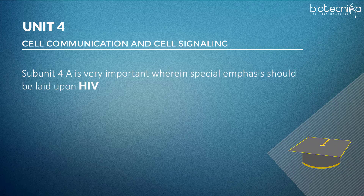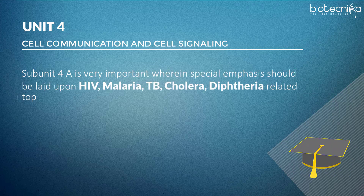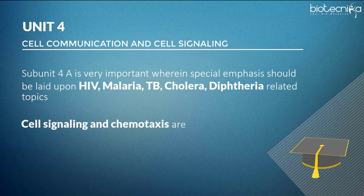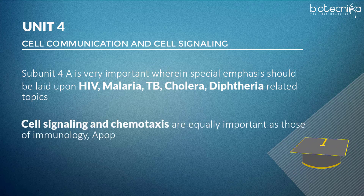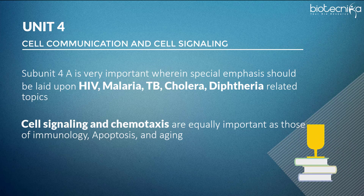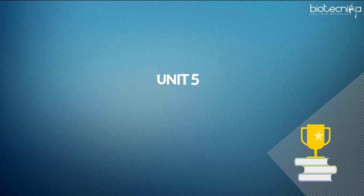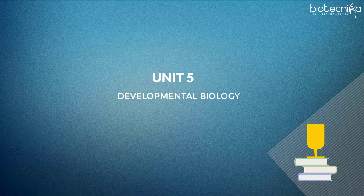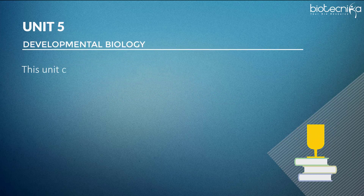Unit 4 — Cell Communication and Cell Signaling: Subunit 4A is very important, wherein special emphasis should be laid upon HIV, malaria, TB, cholera, and diphtheria-related topics. Cell signaling and chemotaxis are equally important, as are immunology, apoptosis, and aging.